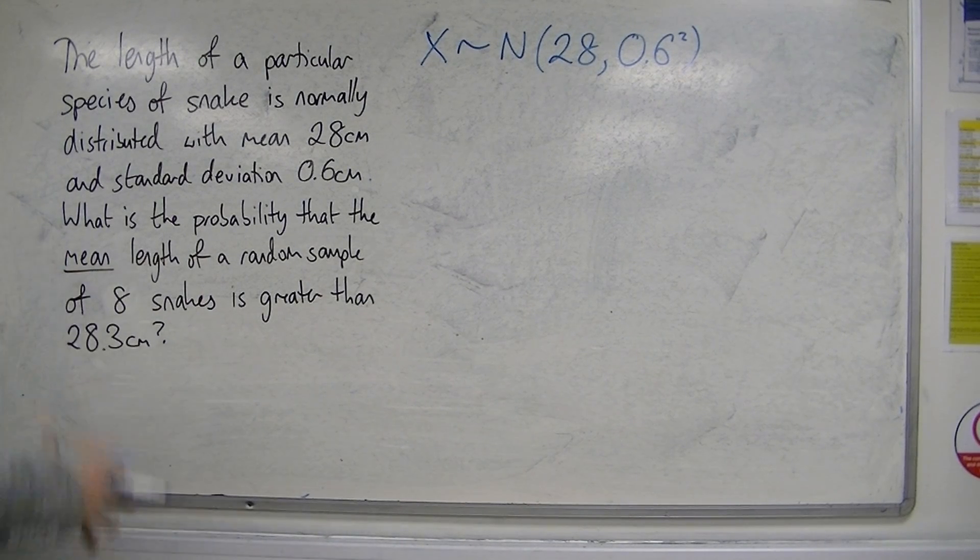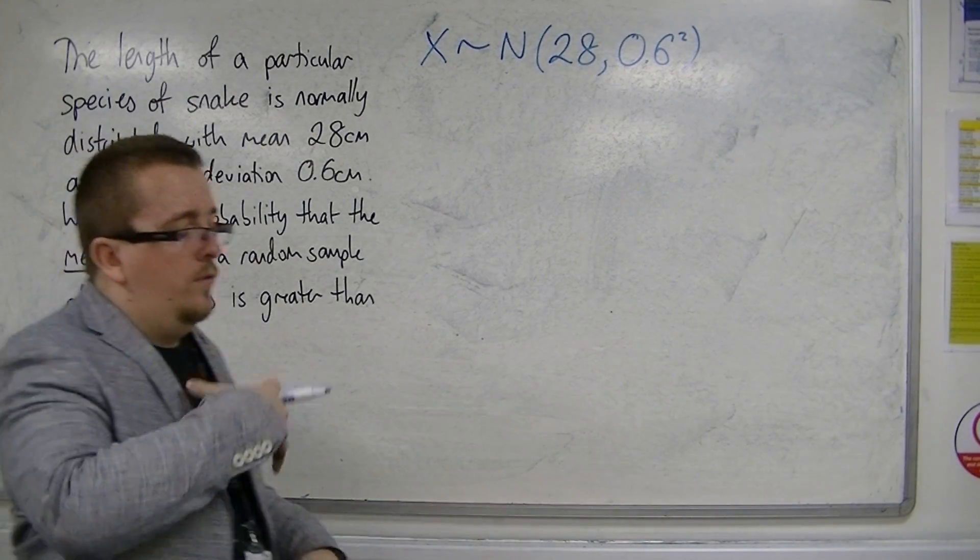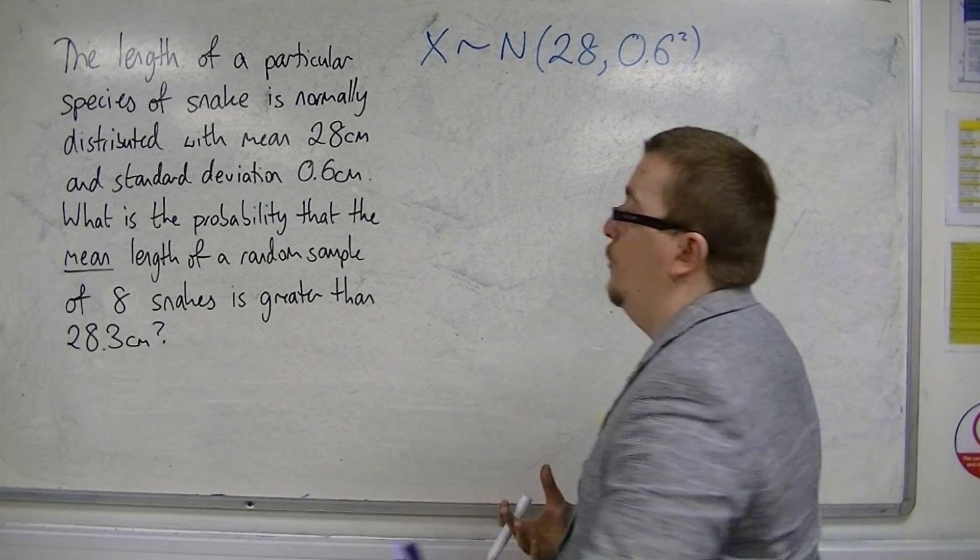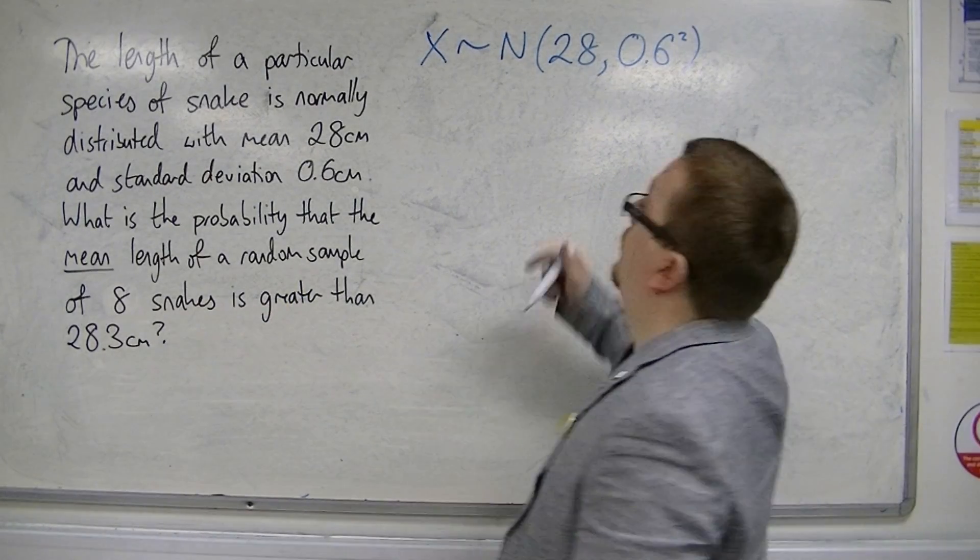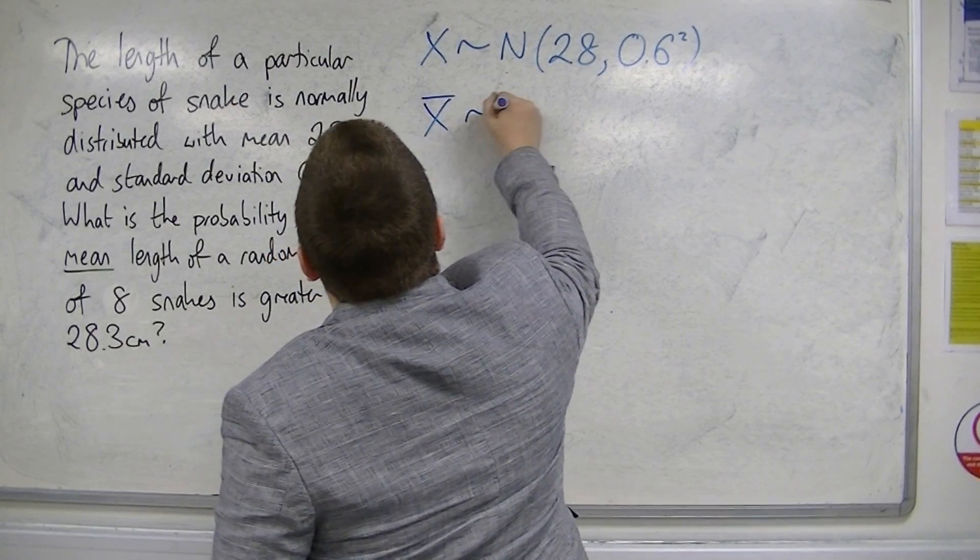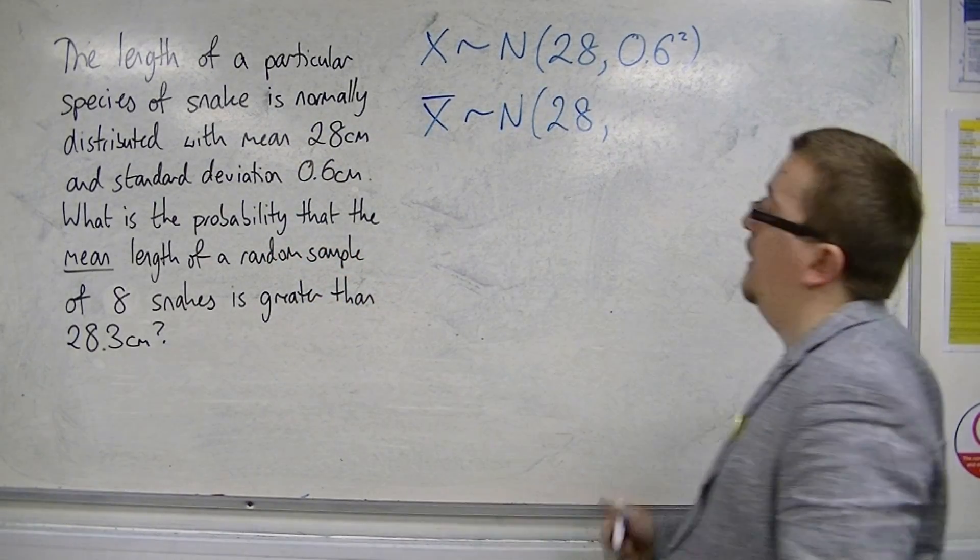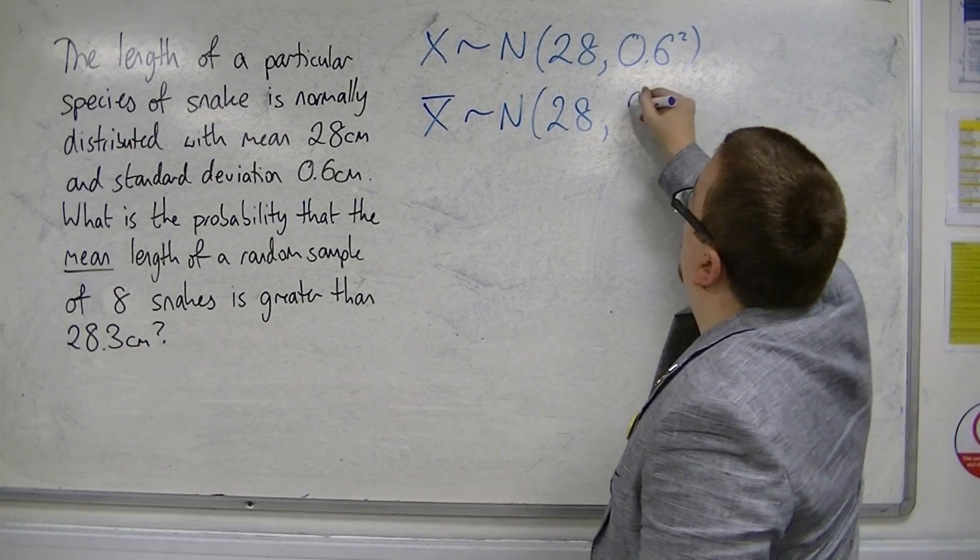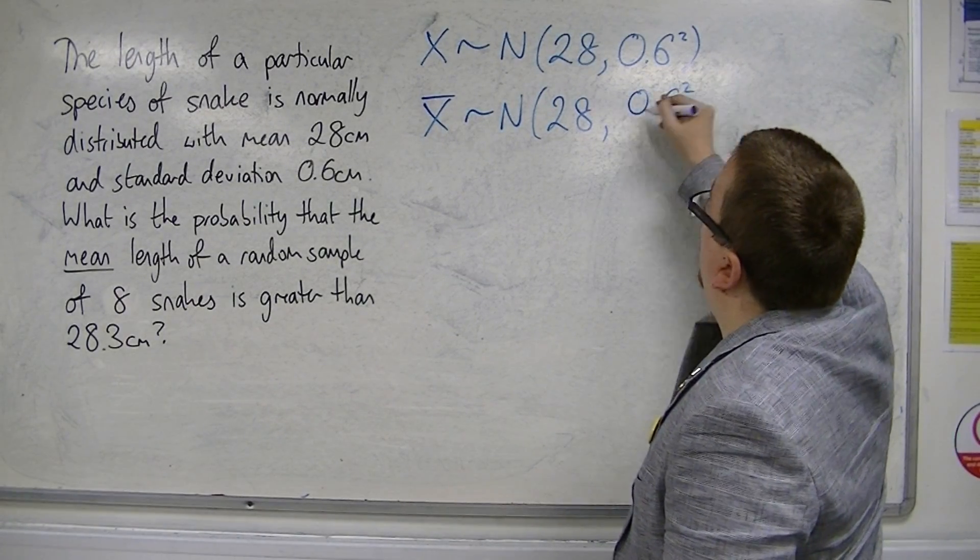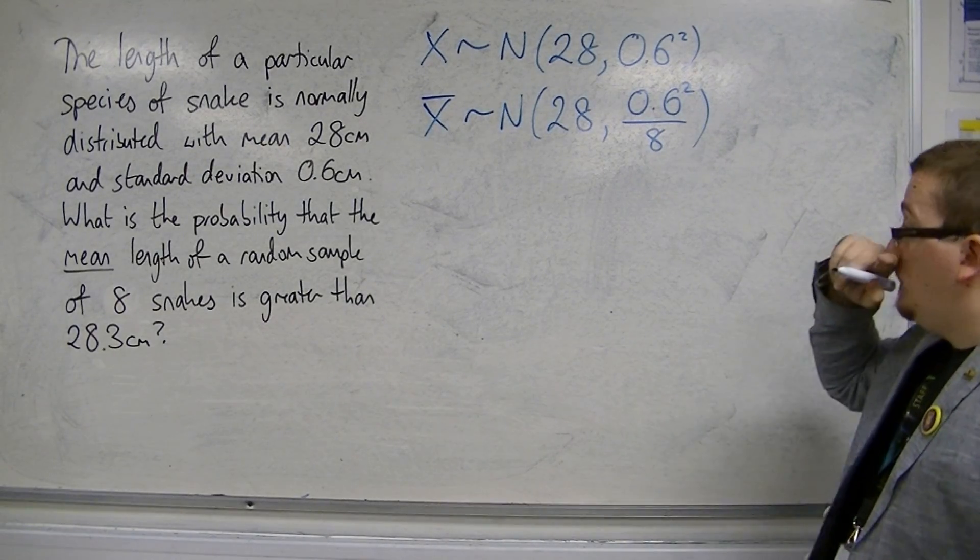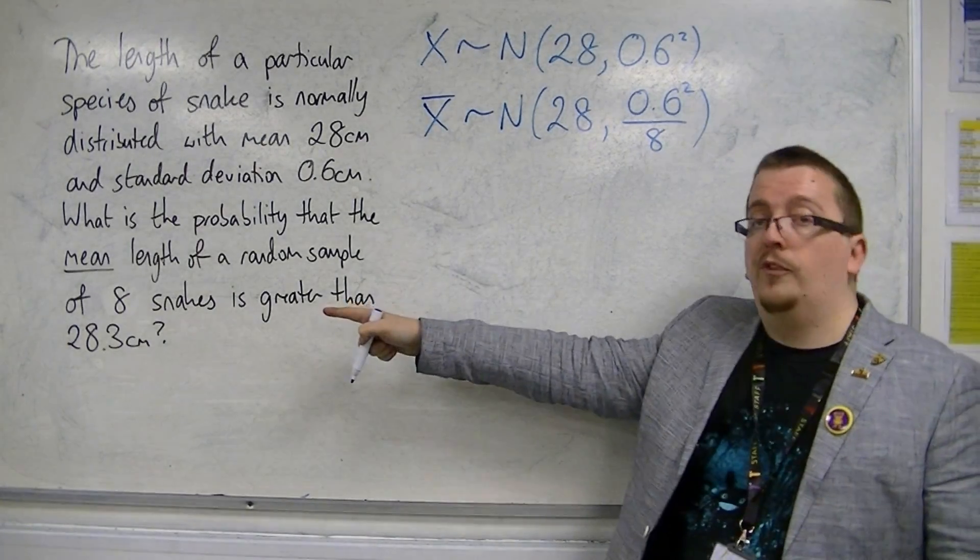Because we're looking at the property of the mean lengths, we're going to be looking at the distribution of the means with a sample size of 8. The means will be normally distributed with the same mean as the population, but the variance will be 0.6 squared over 8, sigma squared over n, where 8 is the sample size.